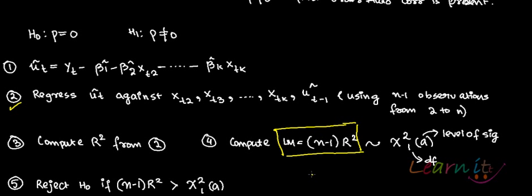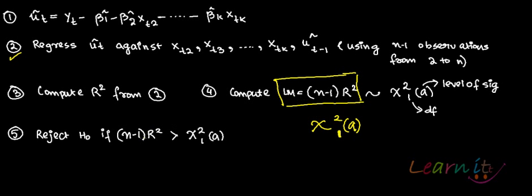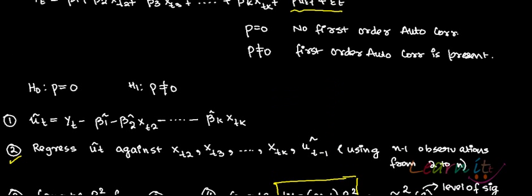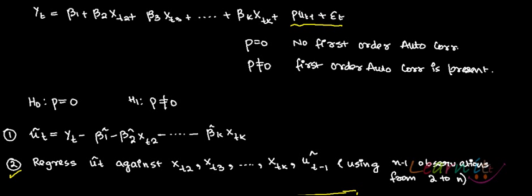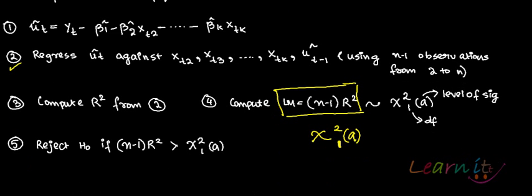From the chi-square table, you check for chi-square with 1 degree of freedom — that is the only restriction you are placing on rho — at your level of significance. If your calculated test statistic (n minus 1) R-squared is greater than chi-square 1 alpha, you reject the null hypothesis that rho equals 0, and conclude that there is significant first-order autocorrelation.